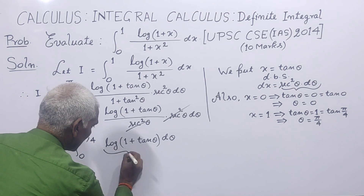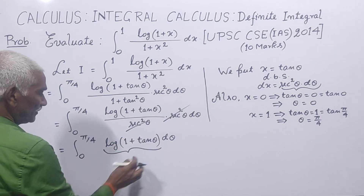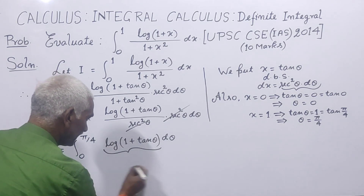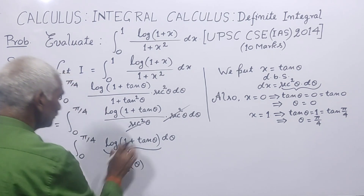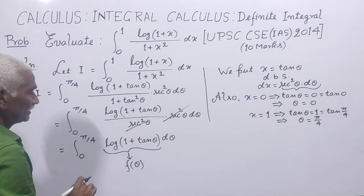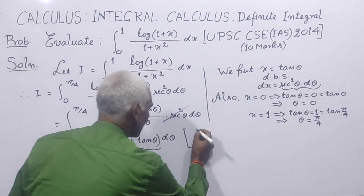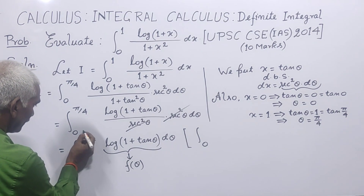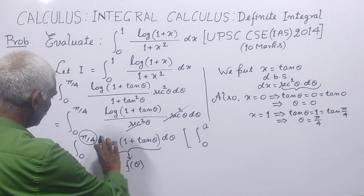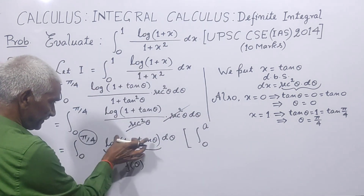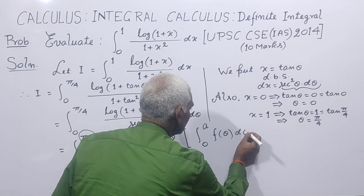So now we understand what concept applies here. The integrand log(1 + tan θ) is a function of θ — we can call it f(θ). So the integral has taken the form: integral from 0 to a of f(θ) dθ, where a = π/4.